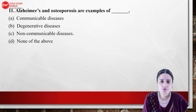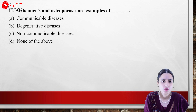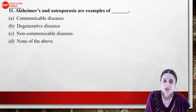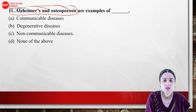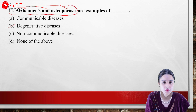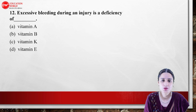Alzheimer's and osteoporosis are examples of what kind of disease? Osteoporosis and Alzheimer's are both degenerative diseases. The answer is degenerative disease.